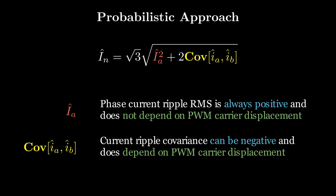In particular, positive values of covariance lead to constructive summation, while negative values mean ripple cancellation through destructive summation.